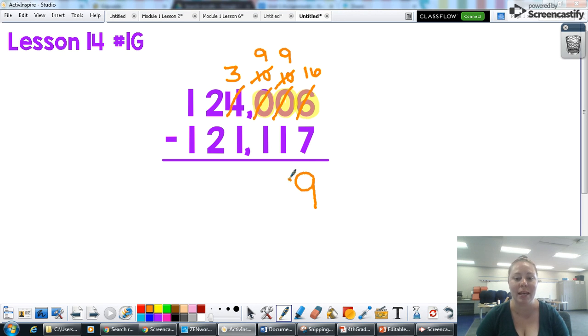So 16 minus 7 I know is 9. 9 minus 1 is 8. 9 minus 1 is 8. 3 minus 1 is 2. And 2 minus 2 is 0. And 1 minus 1 is 0. So I'm not going to write that down. So my answer is 2,889.